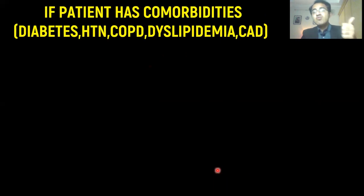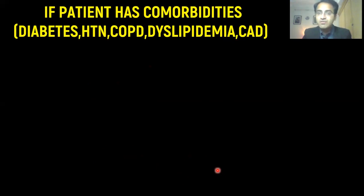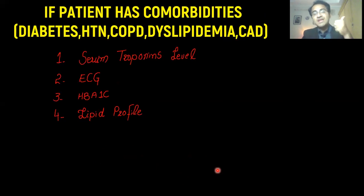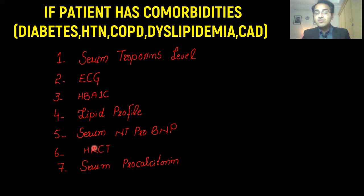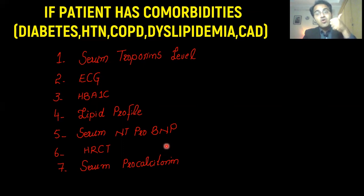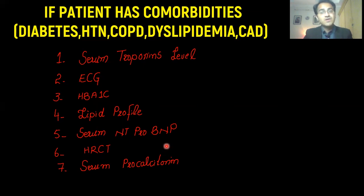What if the patient has comorbidities like diabetes, hypertension, COPD, dyslipidemia, coronary artery disease, or asthma? In these patients, you will also have to perform additional investigations. You will have to perform serum troponin levels and ECG to assess the heart. You will also have to perform HbA1C to assess sugar control and a lipid profile. You will have to order serum pro-BNP levels, because an underlying heart disease can cause pulmonary edema, and that will cause elevated pro-BNP levels.